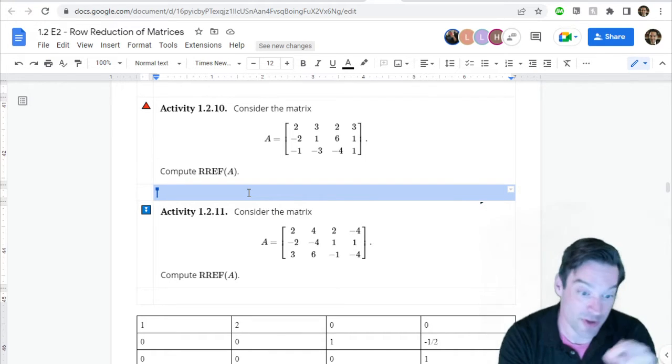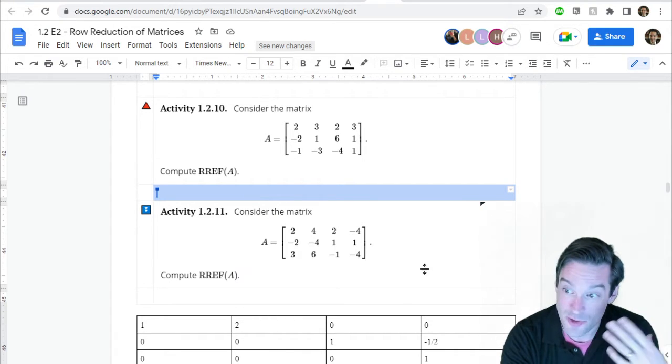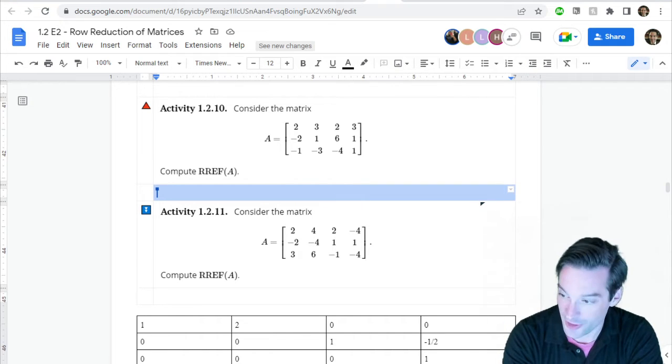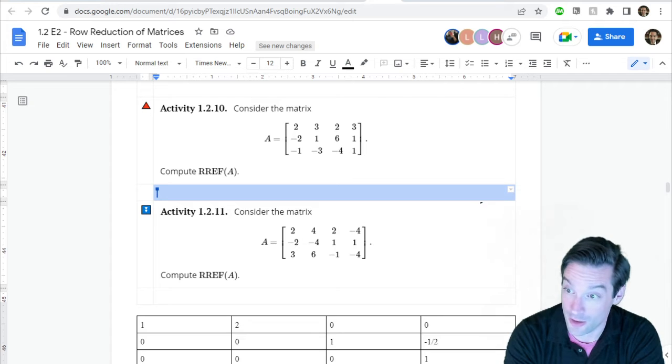As long as your handwriting is legible and well enough organized so that when your team looks back at this later, they can use it as a study aid, then you should be all good to go. So let's take our time on this one. The first few times you do row reduction, it'll probably take you a little bit, so at least 10 minutes. And if we need a little bit more time at the end of that, I'm happy to take a little bit longer. So 1.2.10, reduce this matrix into its RREF and see what you find.